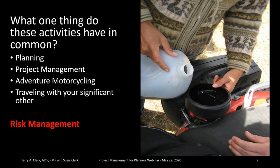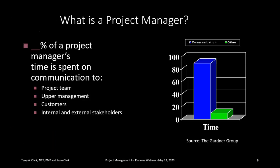What is the project manager? The primary responsibility is communication — 90% of a PM's time is spent on communication, based on research. It's not just talking to your team. Upper management is huge, along with customers and internal and external stakeholders. For planners, appointed and elected officials are a really important part of those stakeholders — they're critical in planning projects. If you're not communicating as a project manager, you're not doing your job.